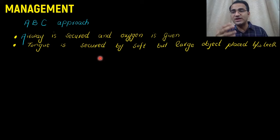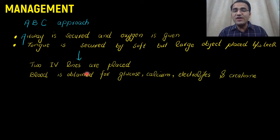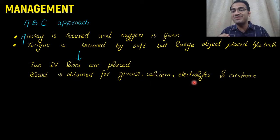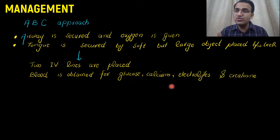You pass two IV lines, and while passing those lines you obtain blood and run investigations. You check blood glucose, calcium, electrolytes, and creatinine, since you are looking for the cause of the prolonged seizure. Hypoglycemia and abnormal electrolytes can precipitate a seizure. Two IV lines are placed and blood is obtained for investigations.